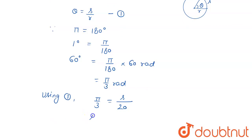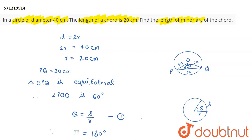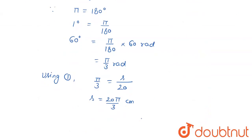Therefore, the length of the minor arc is 20π/3 centimeters. This is our final solution. Thank you for watching the video.